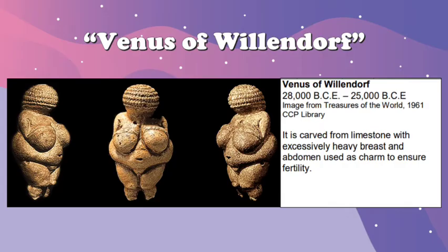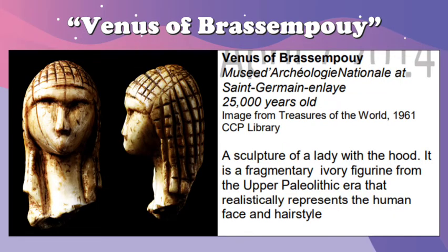Next is the sculpture of Venus of Willendorf. This was made 28,000 BCE to 25,000 BCE. This sculpture is carved from limestone with excessively heavy breast and abdomen, used as a charm to ensure fertility. Next is the sculpture of Venus of Brassempouy, made 25,000 years ago. This is a sculpture of a lady with hood — a fragmentary ivory figurine from the Upper Paleolithic era that realistically represents the human face and hairstyle.